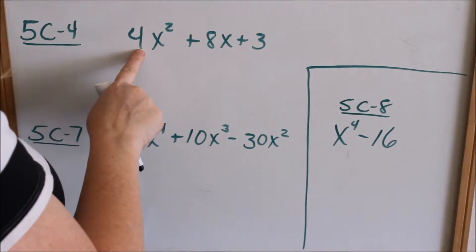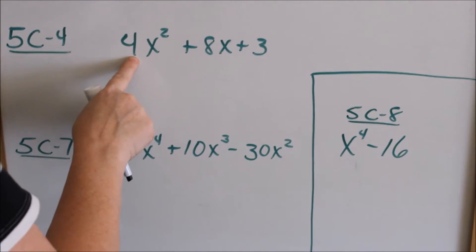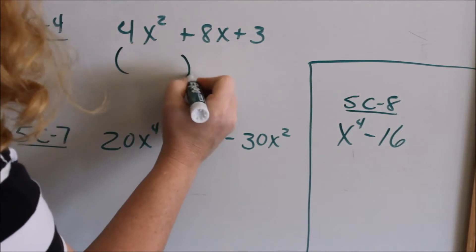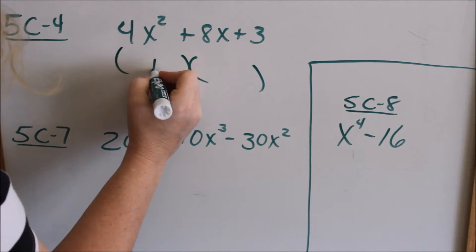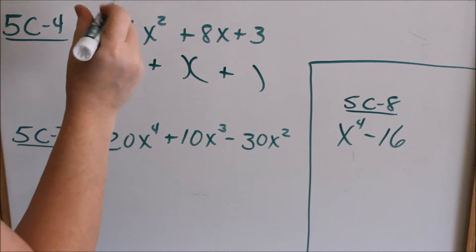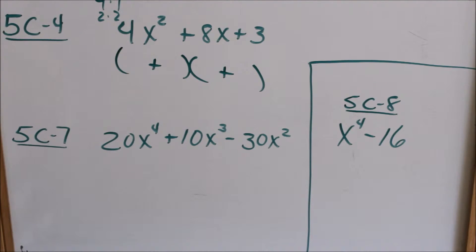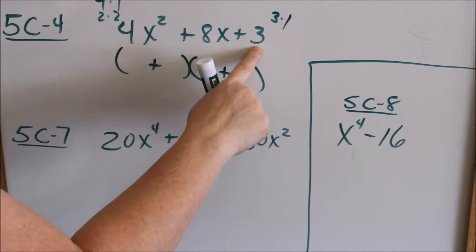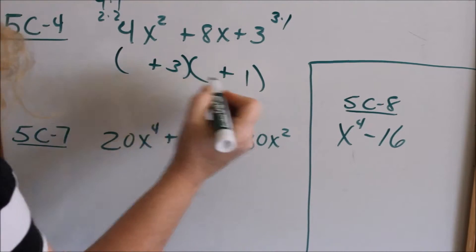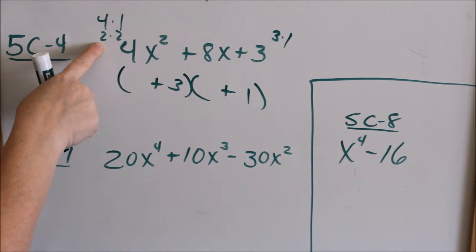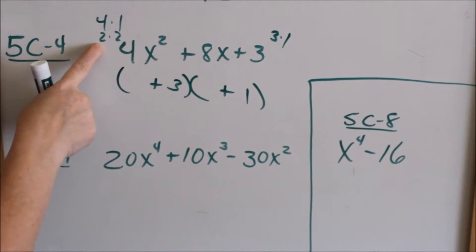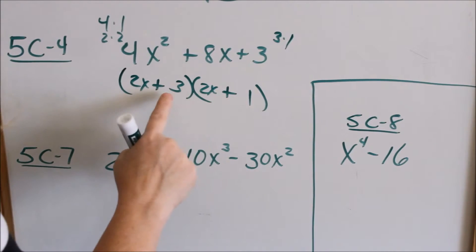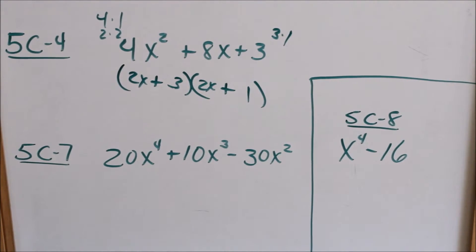Now look at 5C4. We have a coefficient in front of our x squared. The first thing you always look for is can you factor anything out? 4, 8, and 3 — I cannot factor anything out, so I'm ready to go to two parentheses. Positive, positive — I'm in a positive world, so everything is positive. Factors of 4 are 4 times 1 or 2 times 2. Factors of 3 are only 3 times 1. I usually like to start with the one that only has one set of factors. So 3 only has one set, meaning I'll have a 3 and a 1. Let's try 2x and 2x — that gives me 2x plus 6x. Hallelujah, that was the right pick.